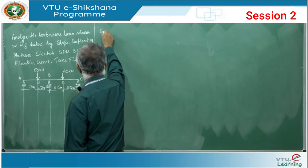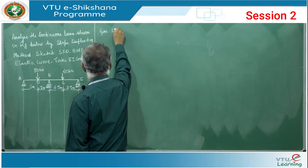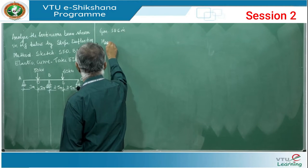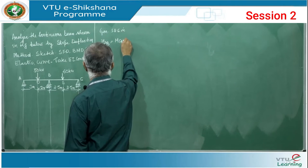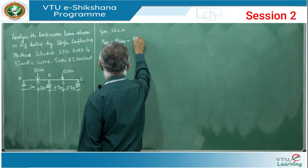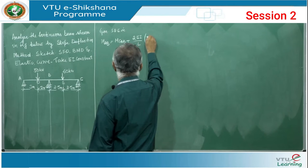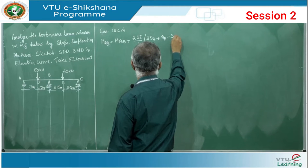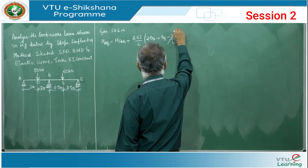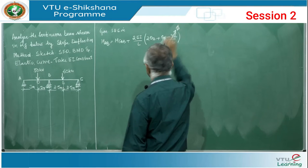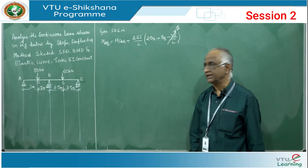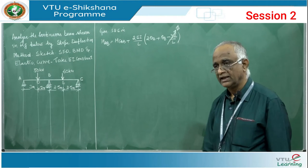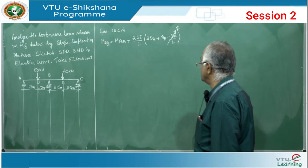The general slope deflection equation is: M_AB equals M_FAB plus (2EI/L)(2θ_A + θ_B − 3Δ/L). For this problem, the last term (Δ) is zero because there is no settlement — all supports A, B, C are at the same level.